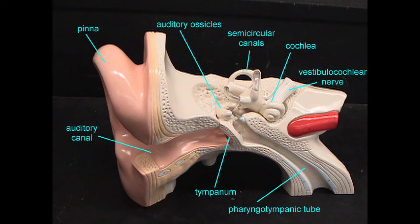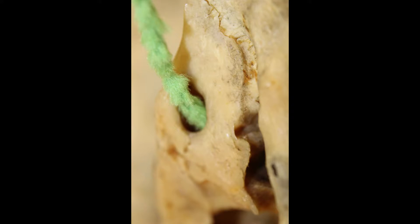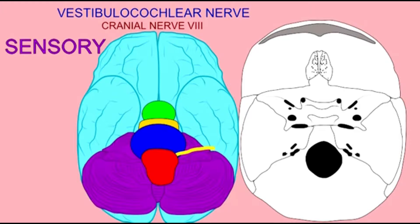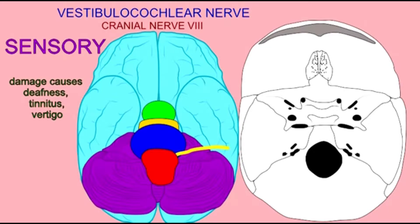The temporal bone also has an internal auditory meatus, where the vestibulocochlear nerve transmits information about sound, balance, and acceleration to the brain.